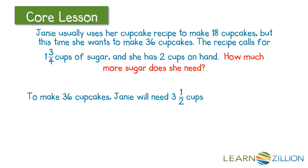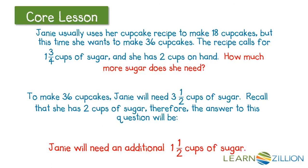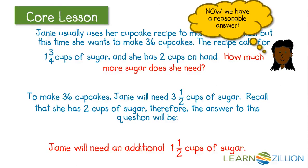To make 36 cupcakes, Janie will need 3 and 1/2 cups of sugar — that's what I found out mathematically. But I also have to remember she already has 2 cups of sugar. Therefore, the answer to my question will be that Janie will need an additional 1 and 1/2 cups of sugar. I had to subtract the 2 cups of sugar she already has from the 3 and 1/2 cups she needs to answer the question properly. That is mathematical reasoning — we did not just get to an answer and say that was our final answer, but we worked our way through and came back to the original problem to make sure we were answering the question that was asked of us. Now that's a reasonable answer.